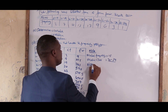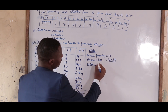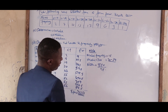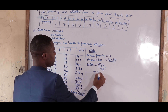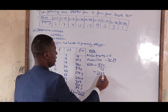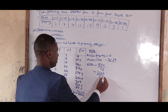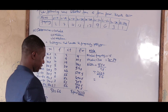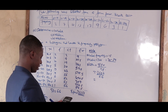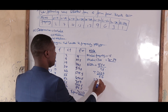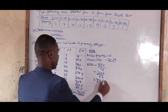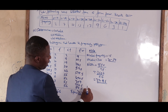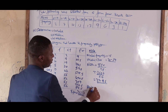The mean is calculated using the formula: mean = sigma fx ÷ sigma f. So we take 2,637 divided by 66, which gives us the mean.